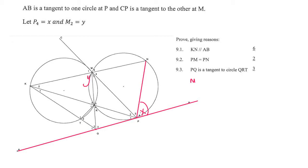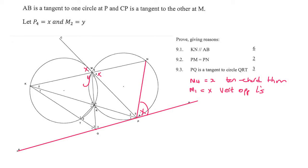So we can say that M4 is equal to x because of the tan-chord theorem. Then we can say that angle M1 is also equal to x because of vertically opposite angles — so that's also equal to x.